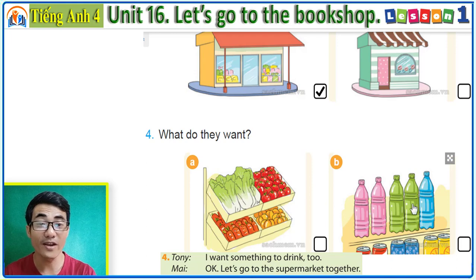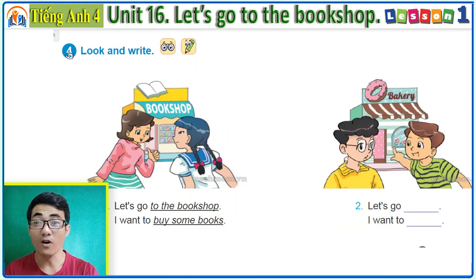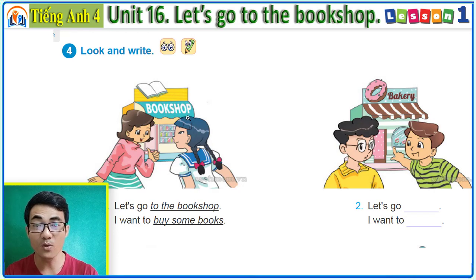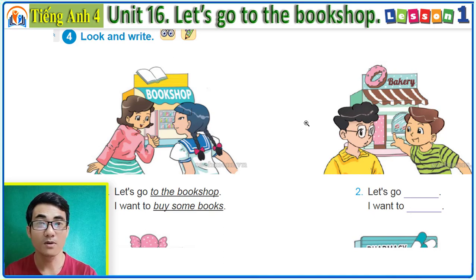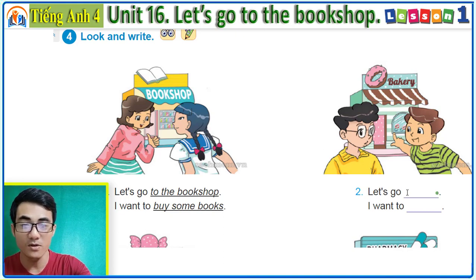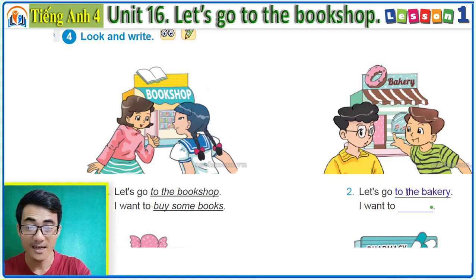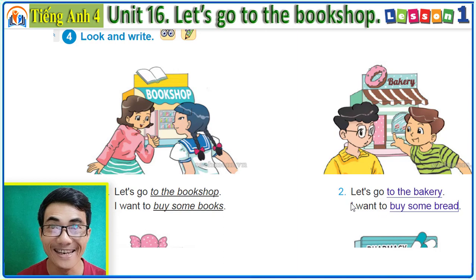Good job! Activity 4: look and write. The example is: 'Let's go to the bookshop. I want to buy some books.' Now look at number two: 'Let's go to the bakery. I want to buy some bread.'